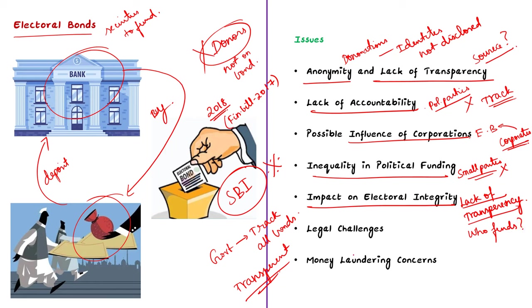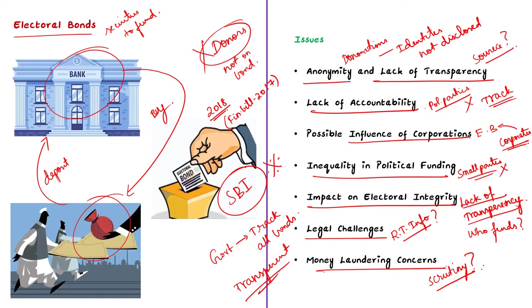There are also legal challenges. The electoral bond scheme has faced many legal challenges in India, raising concerns about compatibility with laws like the Right to Information and transparency. There have been concerns that the scheme could be used for money laundering or illegal activities, as it provides a way to funnel large amounts of money to political parties with limited oversight. Various civil society organizations, activists and opposition parties have called for reforms to make the electoral bond scheme more transparent and accountable. They argue that these reforms are necessary to maintain the democratic and electoral integrity of the political system. Overall, the electoral bond scheme has sparked debate about the balance between protecting donor privacy and ensuring transparency and accountability in political funding, and it remains a contentious issue in Indian politics.